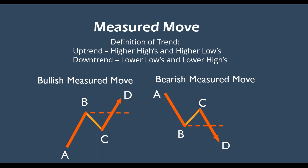A bullish measured move goes from a low to a high, then has a pullback but makes a higher low and then a higher high. This is a classic definition of an uptrend — higher highs and higher lows. As long as you continue to have measured moves to the upside, you're in a bullish trend. Just the opposite is true: if you have a lower high and then a lower low continuing, you are in a downtrend.